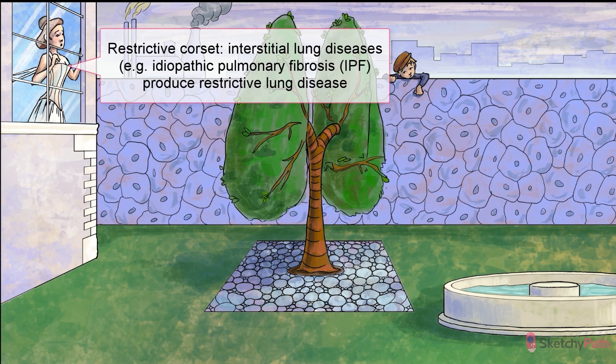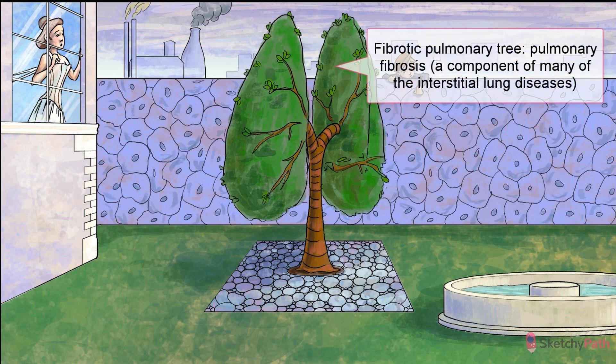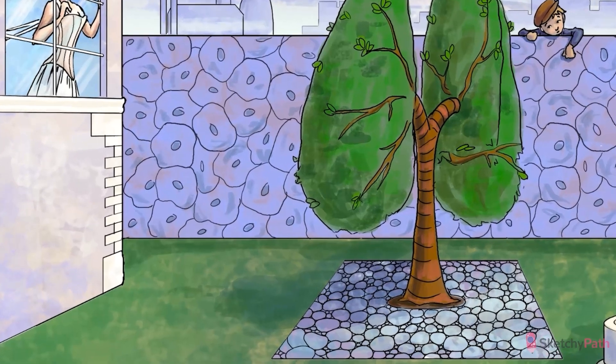For the rest of this chapter, we're going to get into those intrinsic lung pathologies — diffuse parenchymal lung diseases, collectively referred to as interstitial lung diseases. Notice the fibrotic pulmonary tree in the center there? It's going to be a recurring symbol for pulmonary fibrosis. Pulmonary fibrosis is not its own disorder; instead, it's a component of many of the interstitial lung disorders.